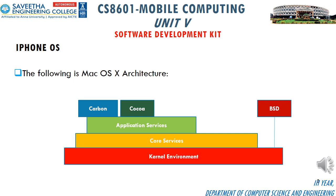Carbon and Cocoa are programming or developing environments. The Carbon environment features a set of programming interfaces derived from earlier versions of the Mac OS. Cocoa is a set of frameworks with programming interfaces in both Java and Objective-C, based on the integration of Apple technologies, Java, and OpenStep.